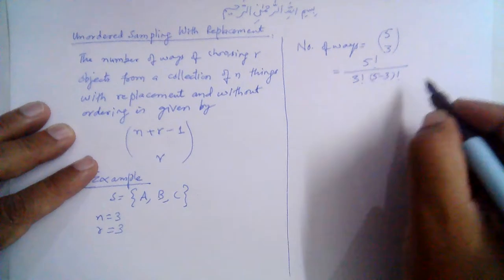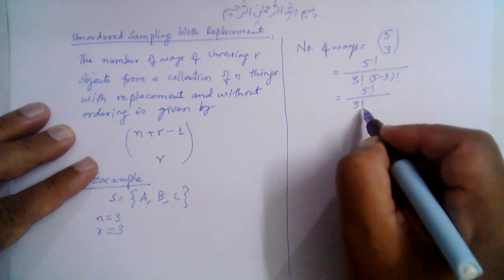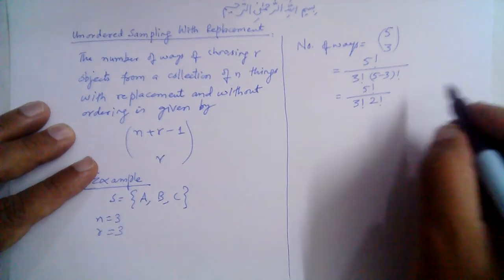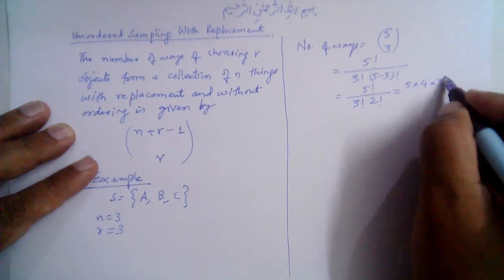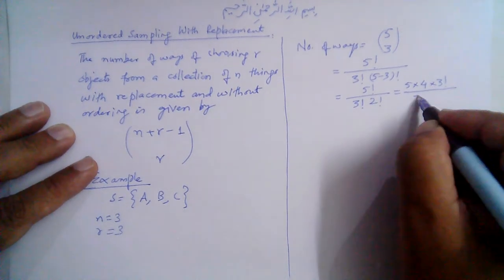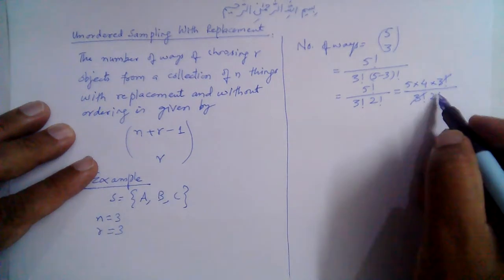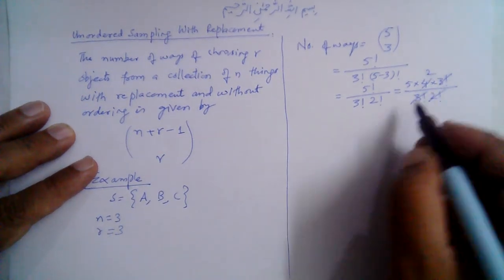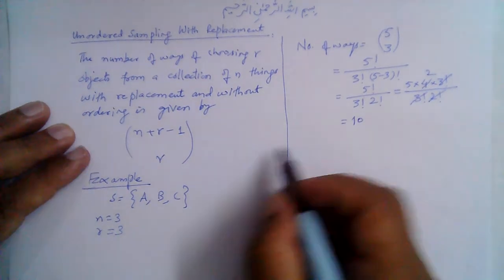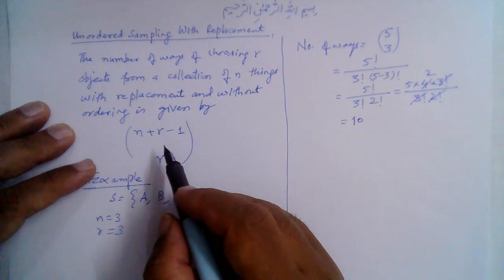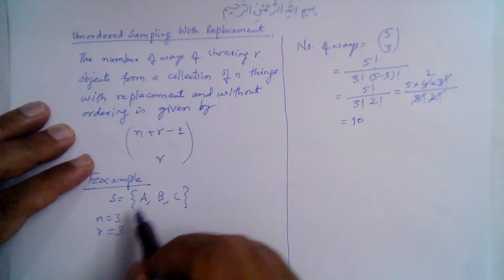C(5, 3) equals 5 factorial divided by 3 factorial times 2 factorial. The 3 factorials cancel, leaving 5×4 divided by 2, which equals 10. So the number of ways in which we can choose 3 objects using unordered sampling with replacement from this set is 10.